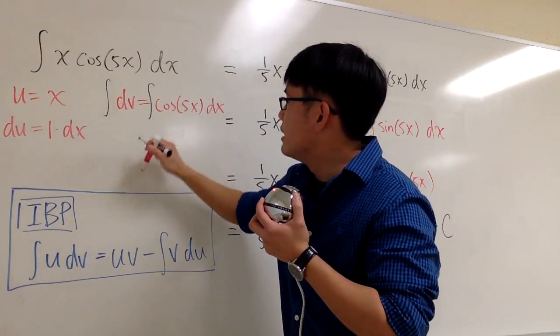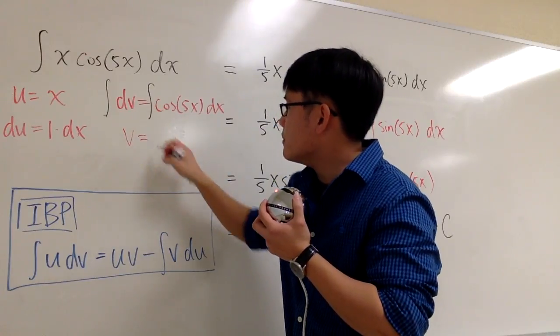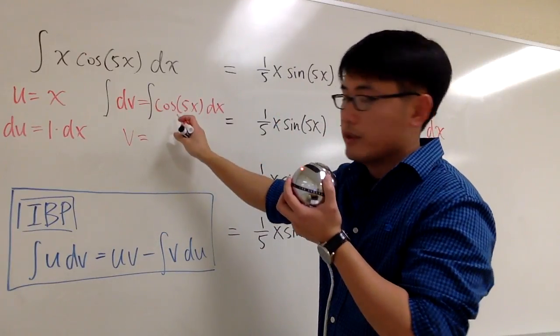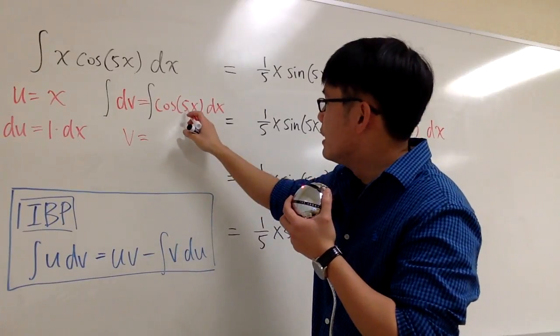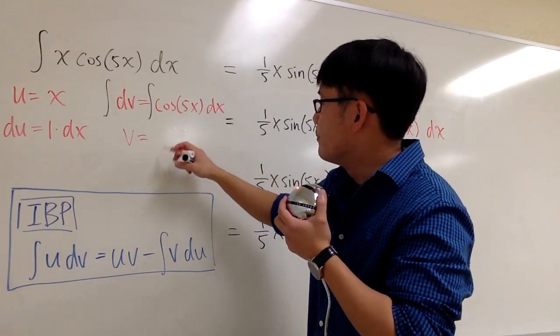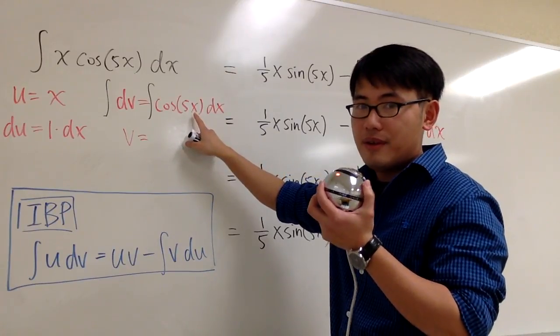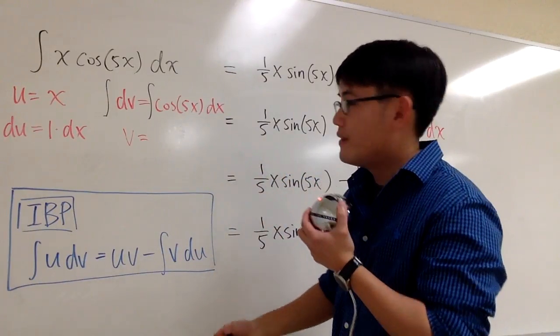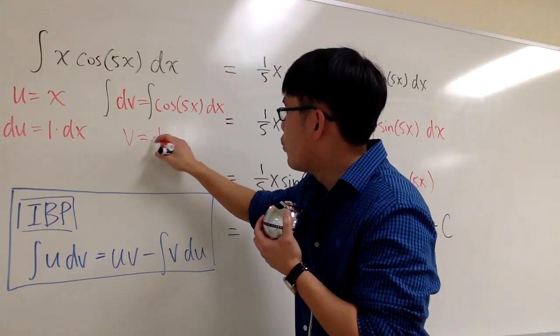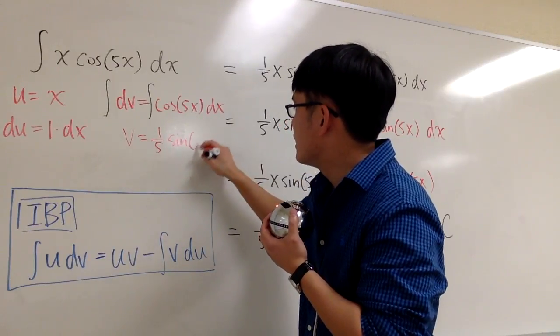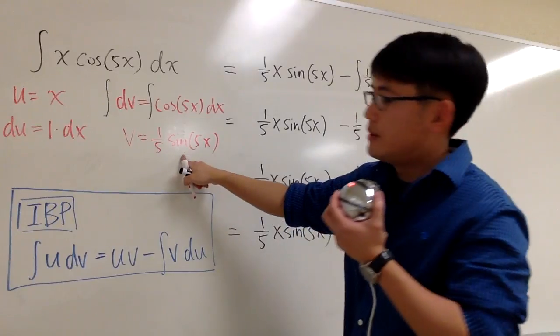Let's integrate both sides. We can get v. And the integral of cosine, it's going to be sine. But then, because the inside is 5x, we have to look at the derivative of 5x, which is 5. We have to divide it by 5. V will be 1 fifth sine, and we'll keep the inside the same.